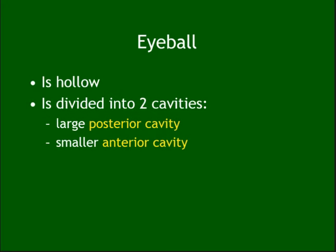Regarding the two cavities — you need to know the boundaries, where the anterior is, where the posterior is, and what separates them. What separates the anterior cavity from the posterior cavity? The lens. What are the subdivisions of the anterior cavity?